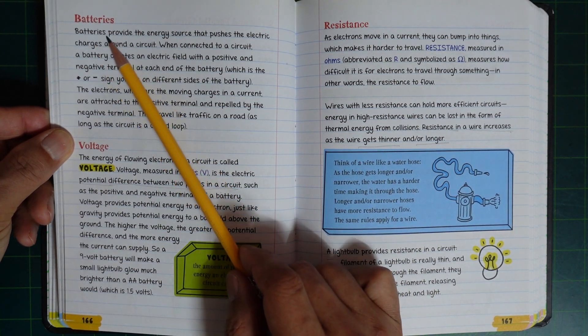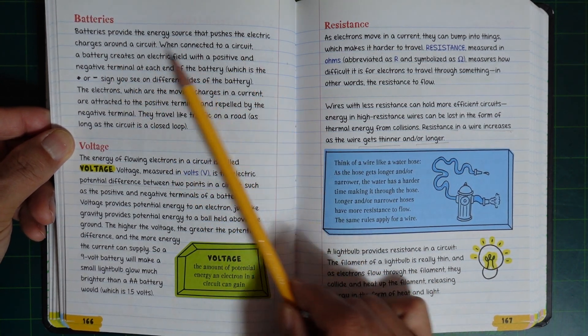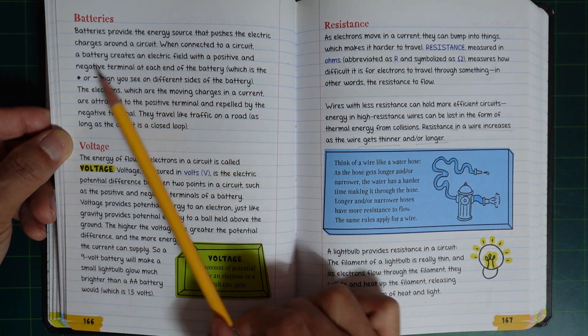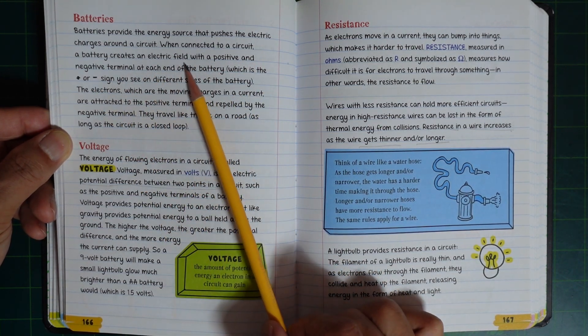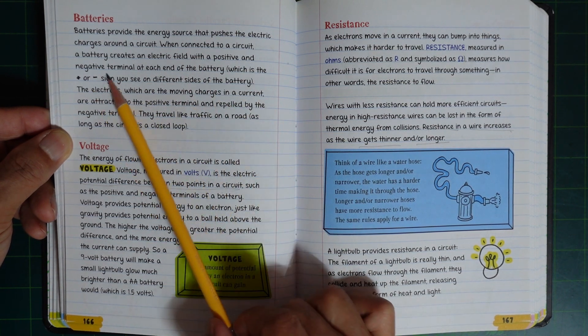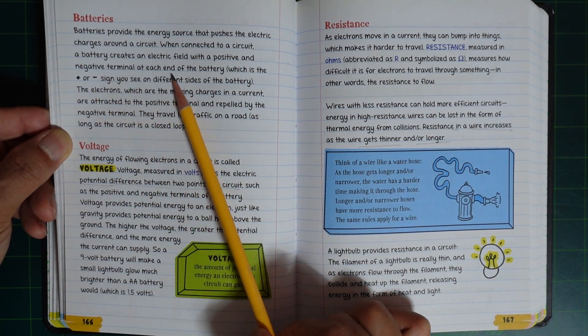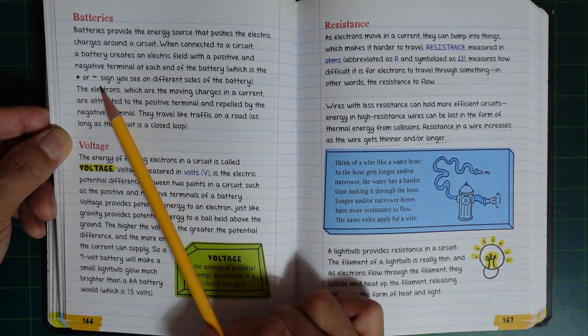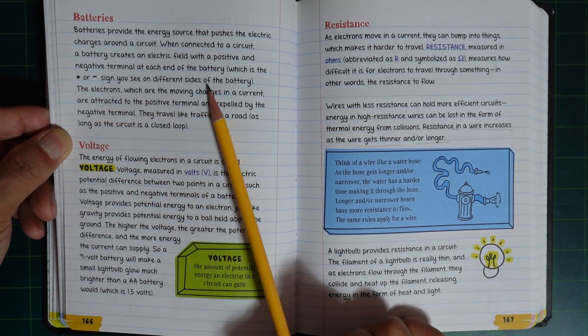A battery provides an energy source that pushes the electric charge around the circuit. When connected to a circuit, a battery creates an electric field with a positive and negative terminal at each end, which is the plus or minus sign you see on different sides of the battery.